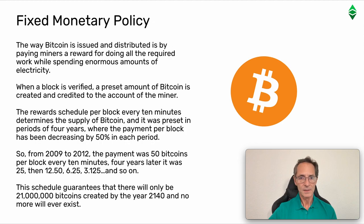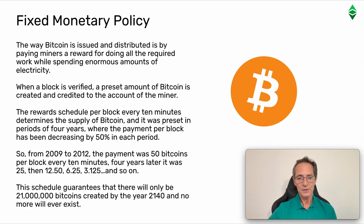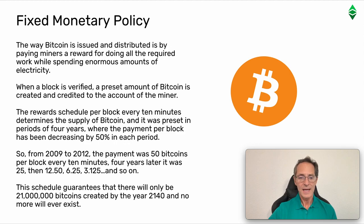Fixed monetary policy. The way Bitcoin is issued and distributed is by paying miners a reward for doing all the required work while spending enormous amounts of electricity. When a block is verified, a pre-set amount of Bitcoin is created and credited to the account of the miner. The reward schedule per block every 10 minutes determines the supply of Bitcoin, and it was pre-set in periods of 4 years where the payment per block has been decreasing by 50% in each period. So from 2009 to 2012 the payment was 50 bitcoins per block every 10 minutes, then 25, then 12.5, 6.25, 3.125, and so on. This schedule guarantees that there will only be 21 million bitcoins created by the end of 2140, and no more will ever exist.